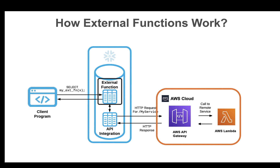As part of the query execution, Snowflake reads the external function definition which contains the URL of the proxy service and the name of the API integration that contains authentication information for that proxy service. Snowflake then reads information from the API integration and composes an HTTP POST request that contains the HTTP header information, the data to be processed, the proxy service resource to use, where the resource contains information about the remote service such as the location of that service, and finally the authentication information for that proxy service resource.